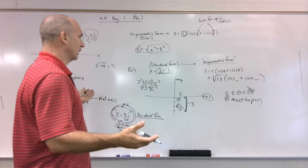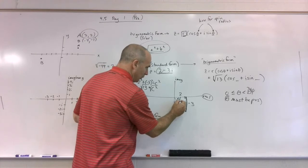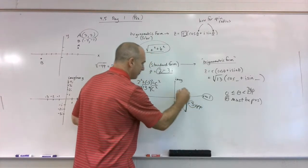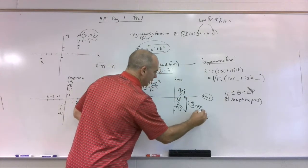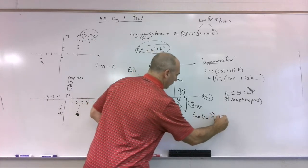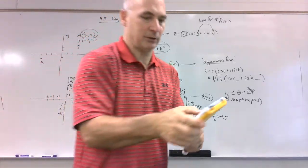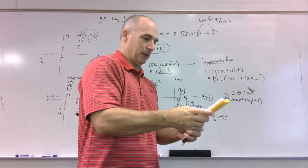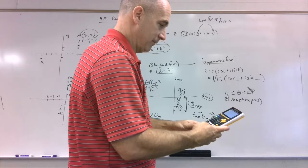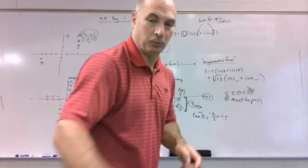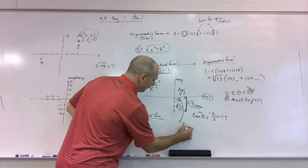Now, how in the world could I ever find that? Well, going back to old stuff we've been doing, if I had this situation, I could say, hey, that's my opposite. This is my adjacent. So I could go tangent of theta is equal to negative 3 over 2, which is just negative 1.5. Now I'd have to go second tangent. And, of course, you've got to have your calculator for that. And I'm going to go second tangent, negative 1.5. That gives me negative 56.3.